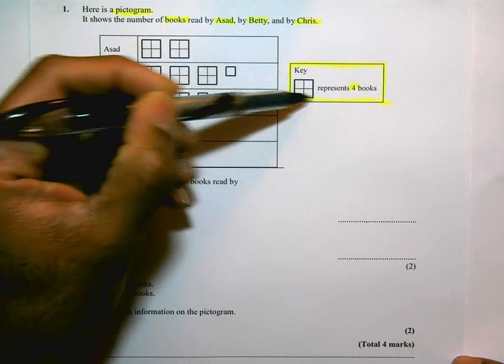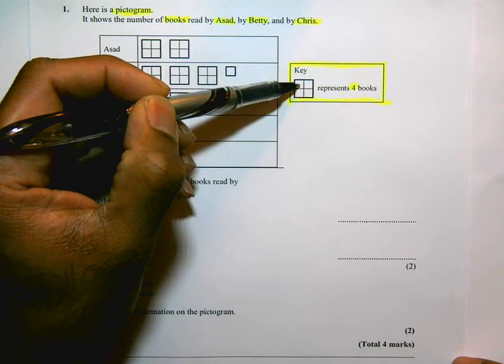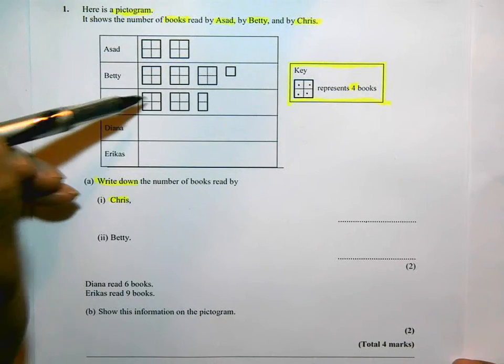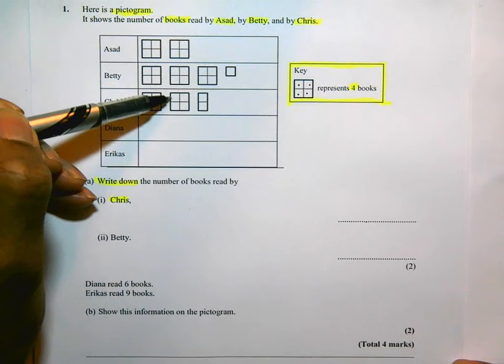Well, one of these things here, these symbols, represents four books. So one, two, three, four. You can think about it like that. So Chris read one, two, three, four, five, six, seven, eight, nine, ten. Ten books.